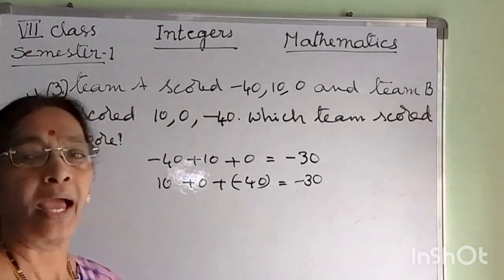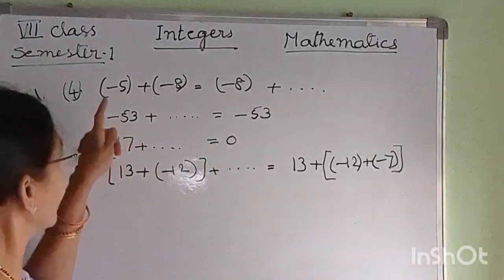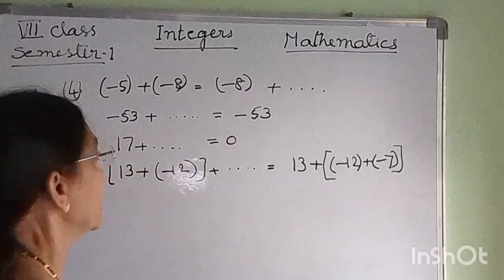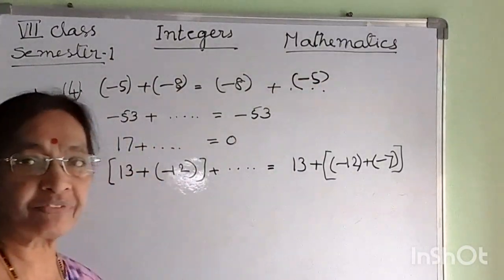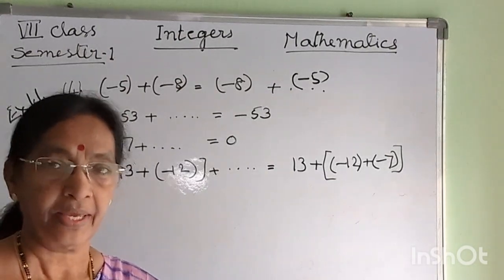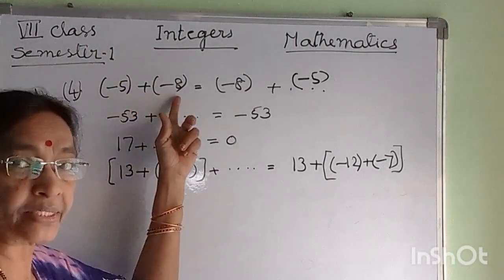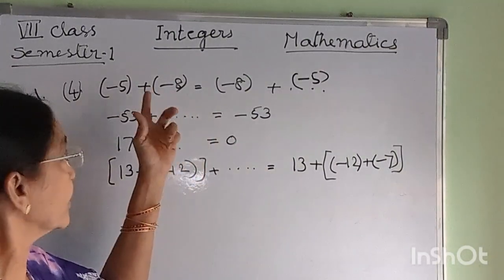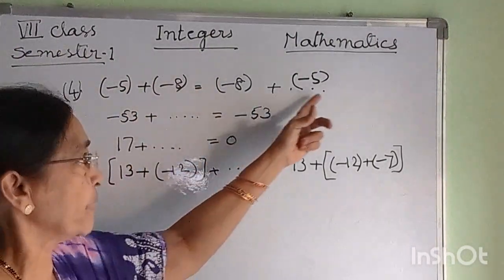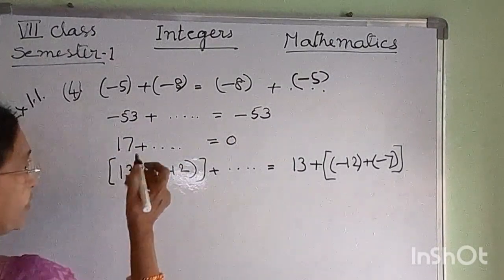Next problem: fill in the blanks to make the statement true. The first one is minus 5 plus minus 8 equals minus 8 plus minus 5. The addition of integers is commutative — we can add in any order. A plus B equals B plus A when A and B are integers. Therefore, minus 5 plus minus 8 equals minus 8 plus minus 5.